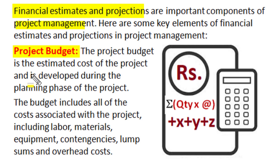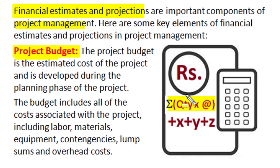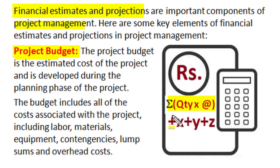One of those key elements is the project budget. The project budget is the estimated cost of the project and it is developed during the planning phase. The project budget includes all costs associated with project implementation, including cost of materials and products, labor cost, cost of equipment and services, contingencies, lump sums, and overhead on the project.